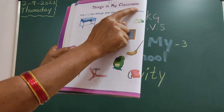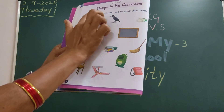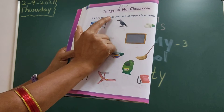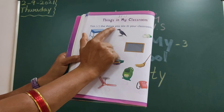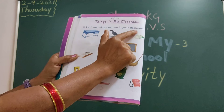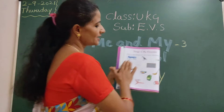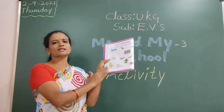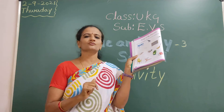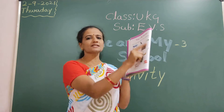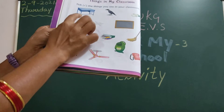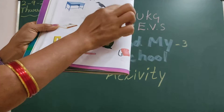Things in my classroom — we learned this in the previous class. Tick the things you see in your classroom. They gave so many things here. Tick the things. So in your classroom, what things are there? You have to think and tick it in the circle.